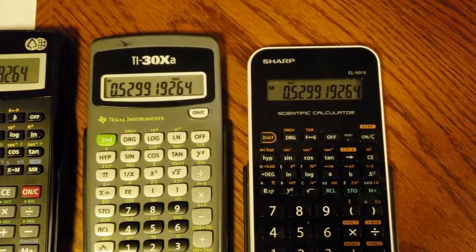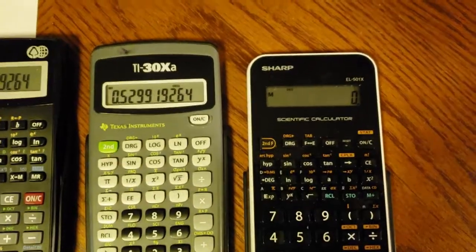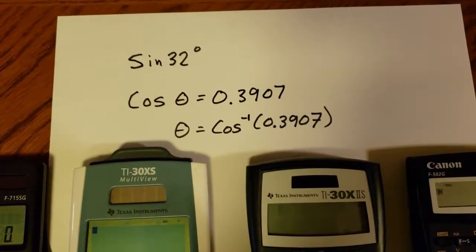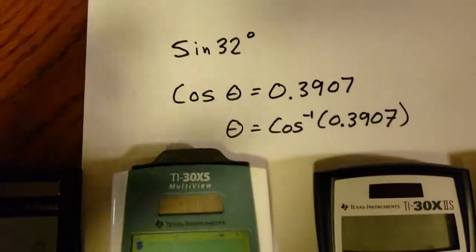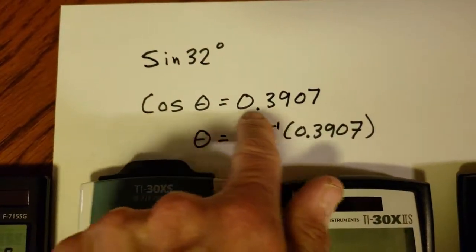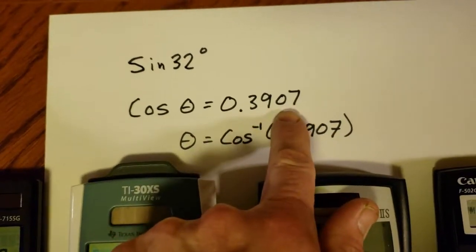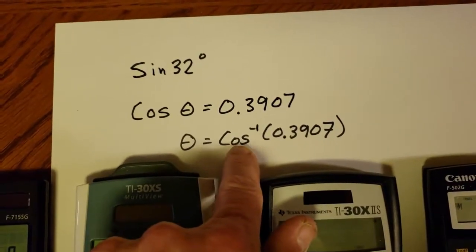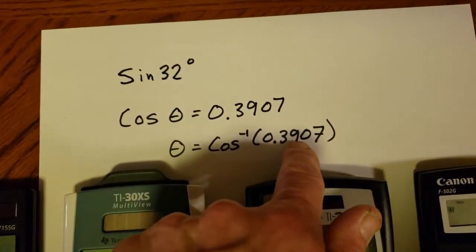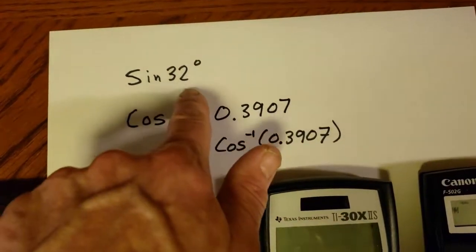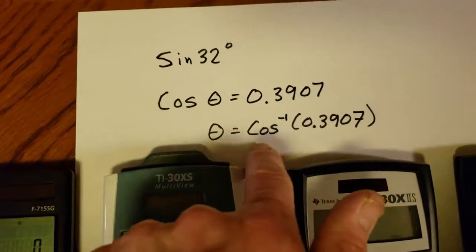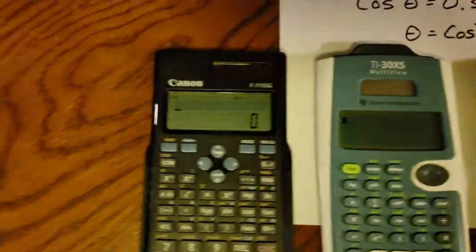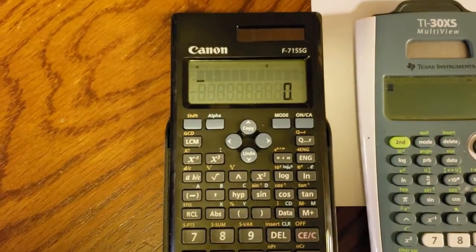Let's clear each of these. Now I'm going to show the inverse cosine. I've got cosine of some angle equals 0.3907 and I want to find the angle. The way you evaluate that is by taking the inverse cosine, or arc cosine, of 0.3907. This is a different example, not related to the sine of 32 degrees.